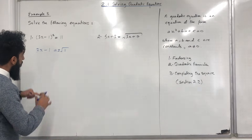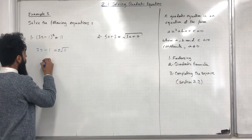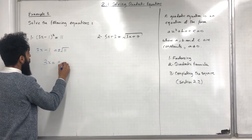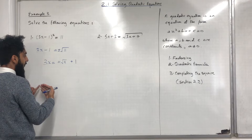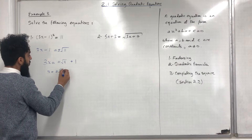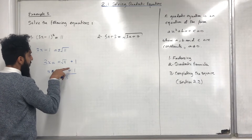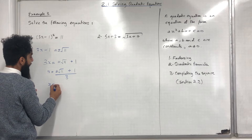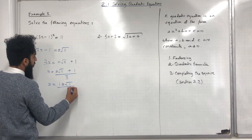Now I'm going to make X the subject. The next step is 3X = ±√11 + 1. Dividing both sides by 3 gives X = (±√11 + 1) / 3. We can rewrite this as X = (1 ± √11) / 3. These two forms of the answer are equivalent.